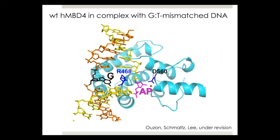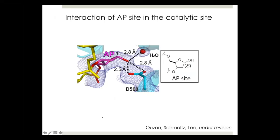In addition, we solved the wild-type MBD4 in complex with GT mismatched DNA. Because we used wild-type enzyme with GT mismatched DNA, it generated an abasic site in situ. We found the catalytic carboxylate, arginine finger, and guanine. In this structure, the AP site is nearby the catalytic carboxylate, but there is apparently no covalent bond between the abasic site H1-prime and the carboxylate oxygen, because the distance was greater than 3 Ångströms. The catalytic carboxylate is making a hydrogen bond with the abasic site hydroxyl group, and the stereochemistry at this position indicates water attacks from the back side of substrate thymine.